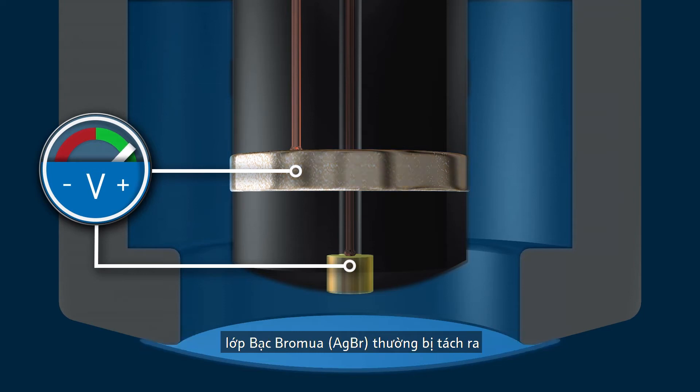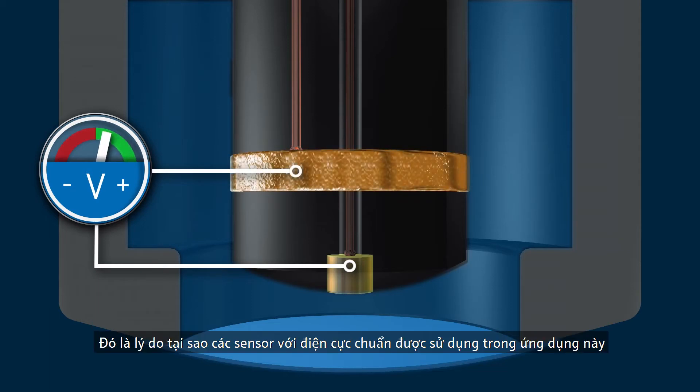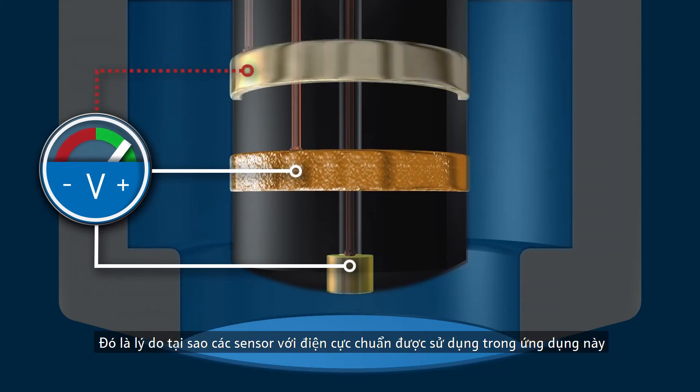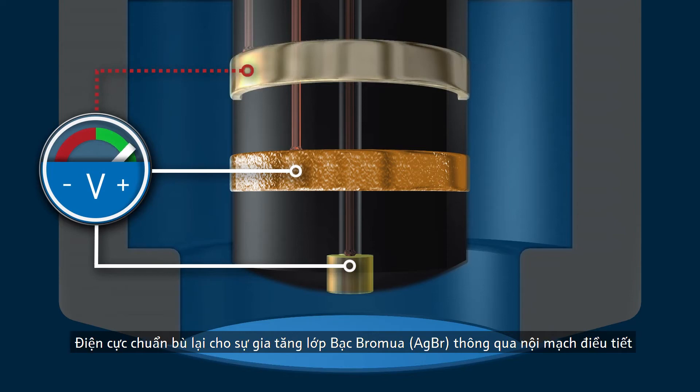The silver bromide layer is regularly removed at moderate temperatures. However, it remains permanent. That's why sensors with reference electrodes are used in these applications. The reference electrode compensates for the increasing silver bromide layer via an internal regulating circuit, considerably reducing the maintenance for the sensor.